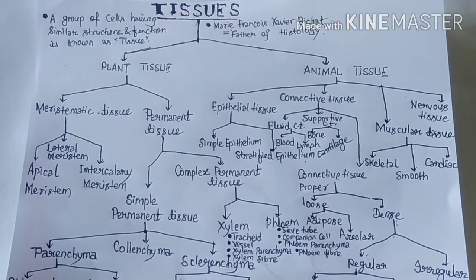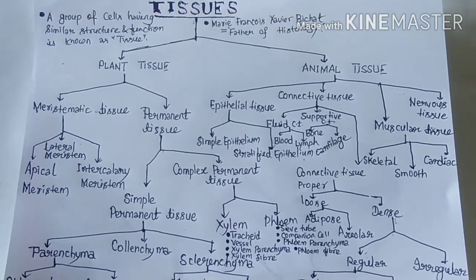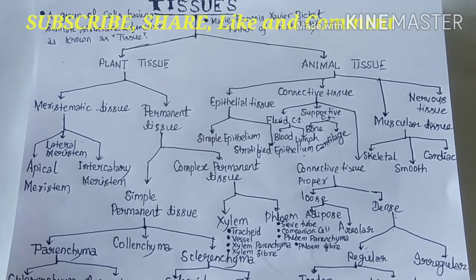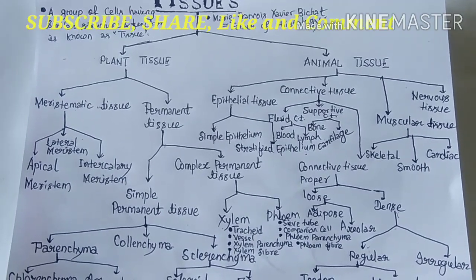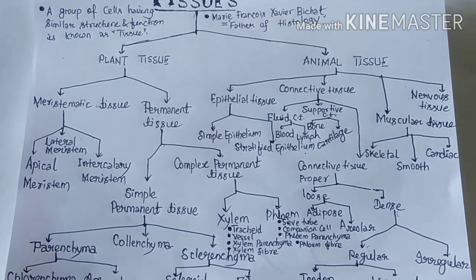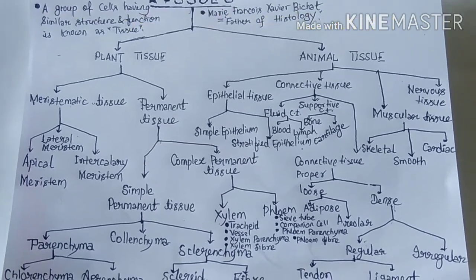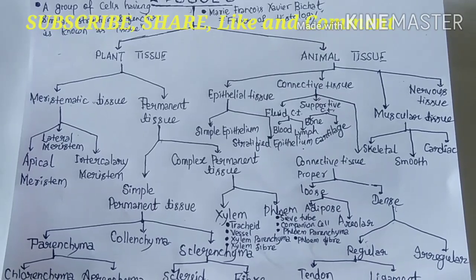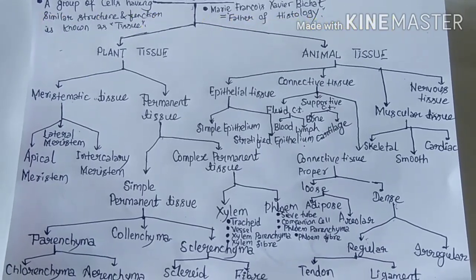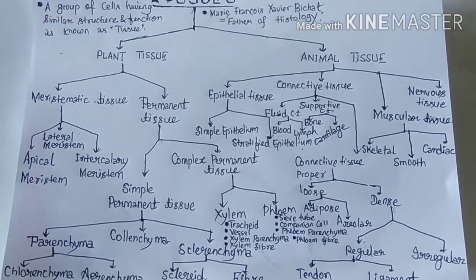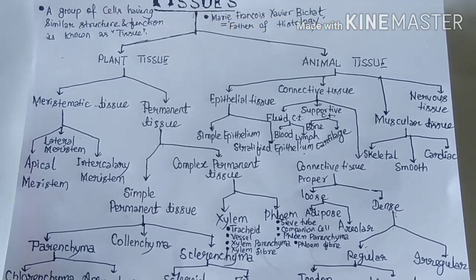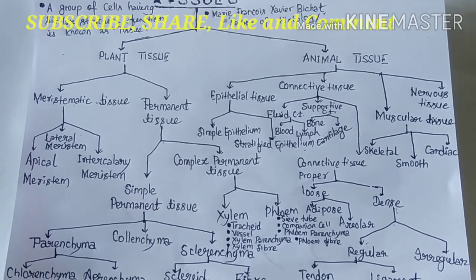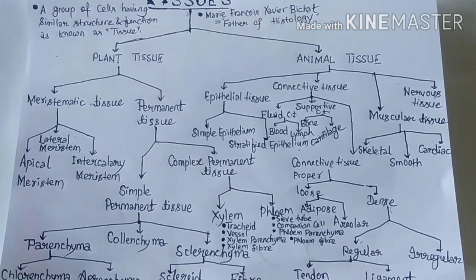The work of complex permanent tissue is to supply food molecules, water, and minerals to different parts of the plant body. Since it is of two types — xylem and phloem — xylem tissue helps to transport water and mineral particles from root to shoot tip in a vertically upward direction.